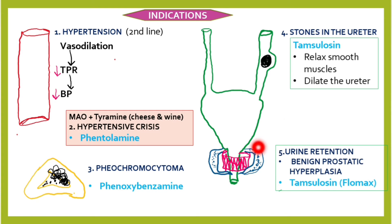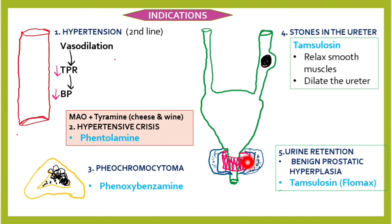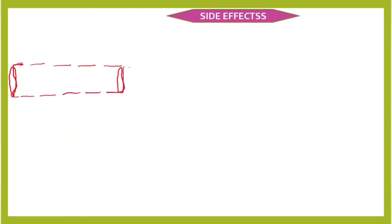We have two sphincters: the internal urethral sphincter, which we cannot control voluntarily, and the external urethral sphincter, which we can. The internal urethral sphincter has alpha-1 receptors, and the prostate smooth muscle has alpha-1 receptors as well. In case of prostate enlargement, there is narrowing of the urethra, so we inhibit alpha-1 receptors in the internal urethral sphincter and prostate smooth muscle, allowing urine to pass easily.